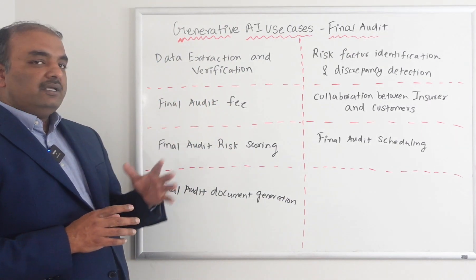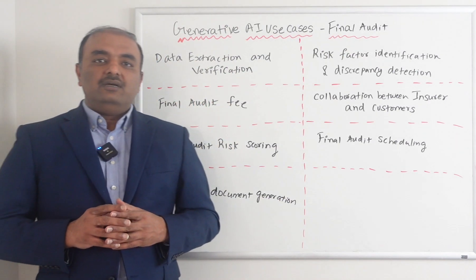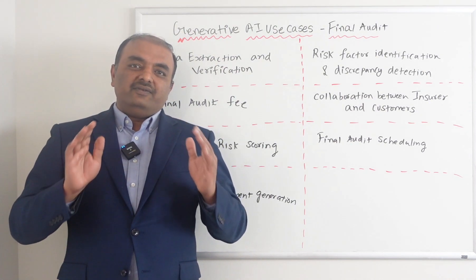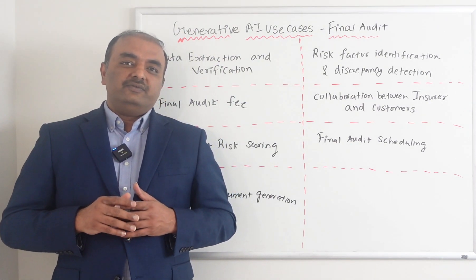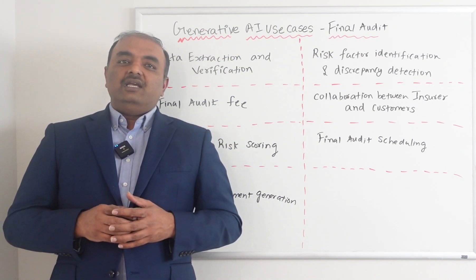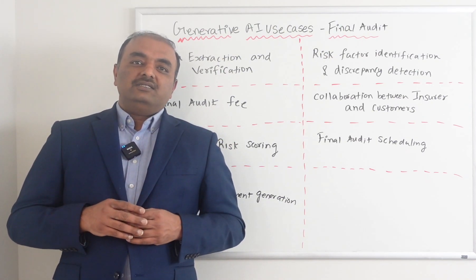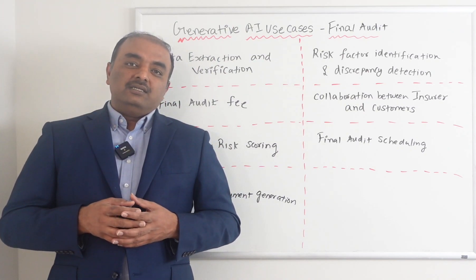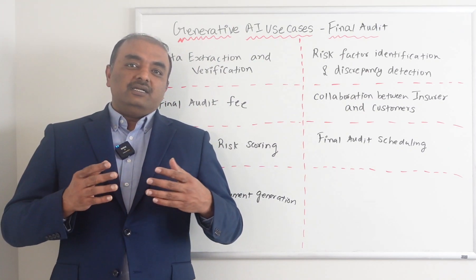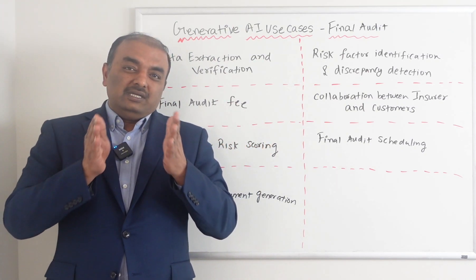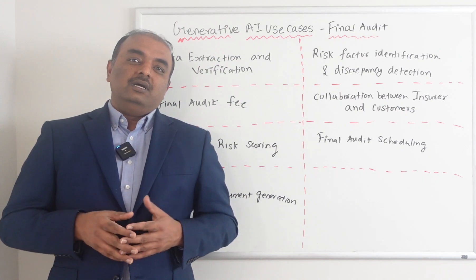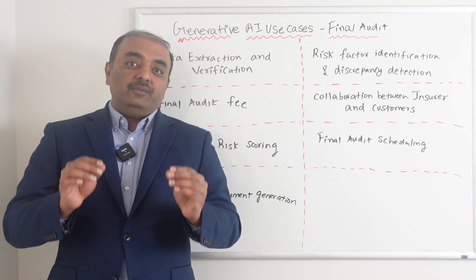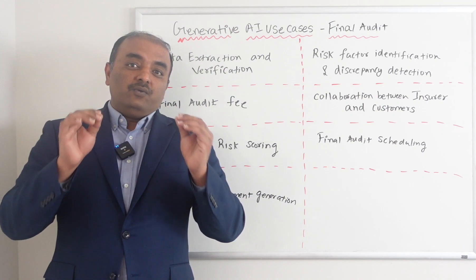The second use case is audit fee. Every audit has some kind of fee. Instead of giving a static fee — for example, charging $100 for every audit regardless of complexity — AI can look at the complexity of the work and charge the fee automatically based on the workload, since some audits need extensive work whereas others need less.